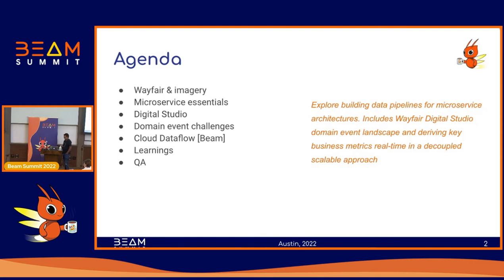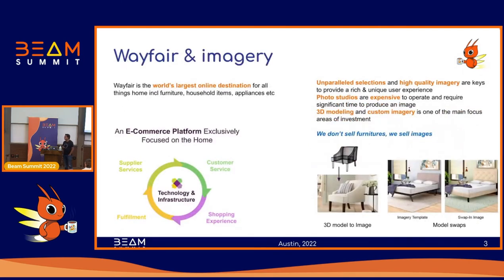I'll talk about how we created a data pipeline to solve some business metrics in real time in a more decoupled way. You might have heard about Wayfair — it's the world's largest online destination for all things home, including furniture, household items, and appliances. It's an e-commerce platform focused on the home category. With any e-commerce platform, two things are very important: the choices of products you give customers, and providing them with high-class imagery. Photo studios are very expensive to operate and don't scale — you have to take furniture to a studio to collect images, and it doesn't scale when you're selling millions of products.